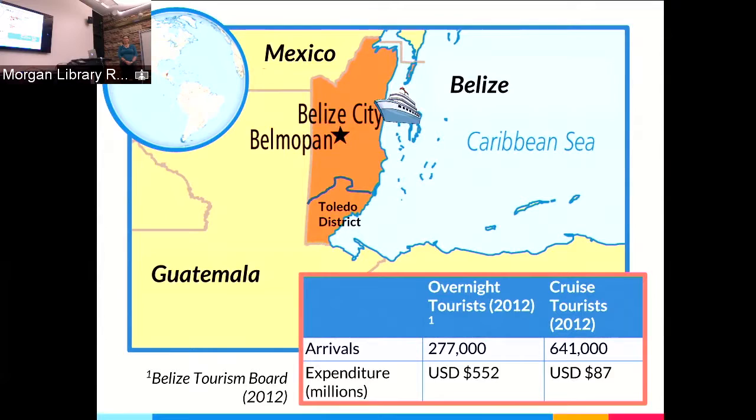There's a good number of overnight tourists. This data is from 2012, so the number is higher now, and there are definitely a lot of cruise tourists coming to the north. We, however, were in the south in the Toledo district — the poorest district with the fewest people. It's often referred to as the forgotten district because the government doesn't provide the help that's needed. Just 2% of tourists to Belize go to Toledo.